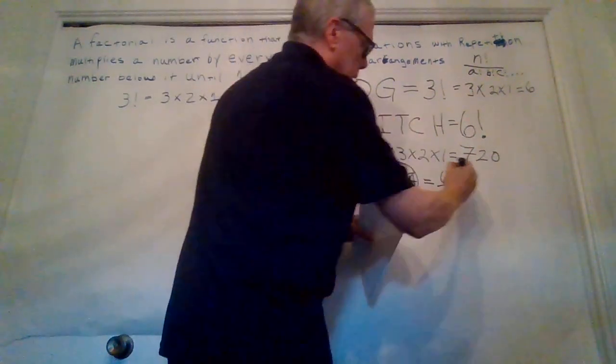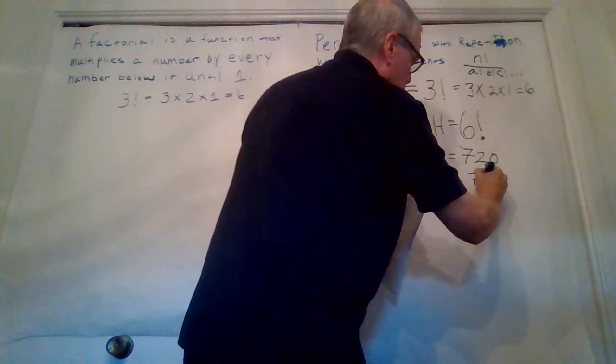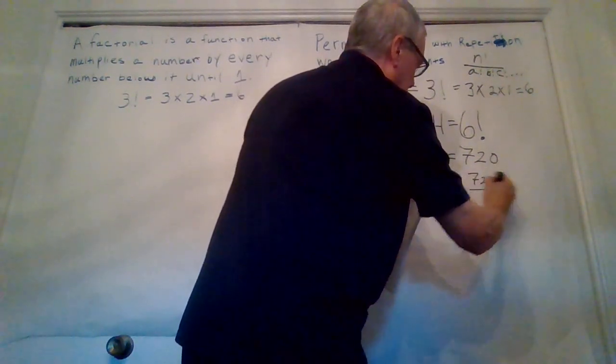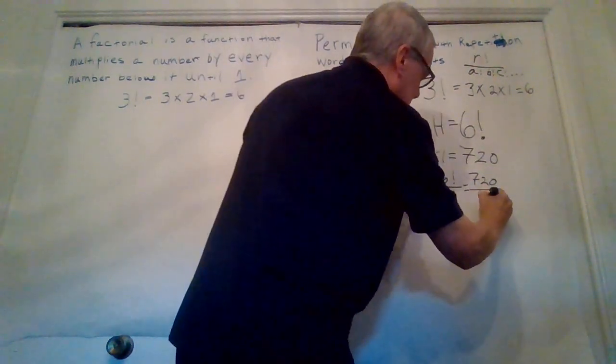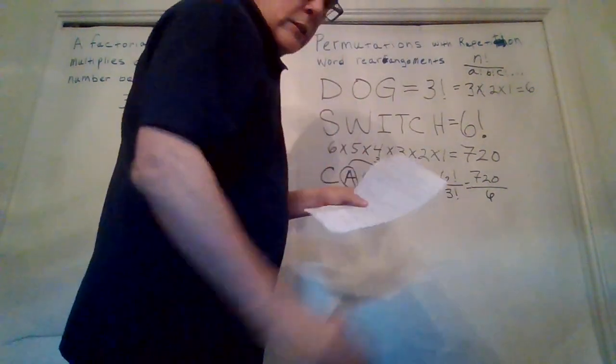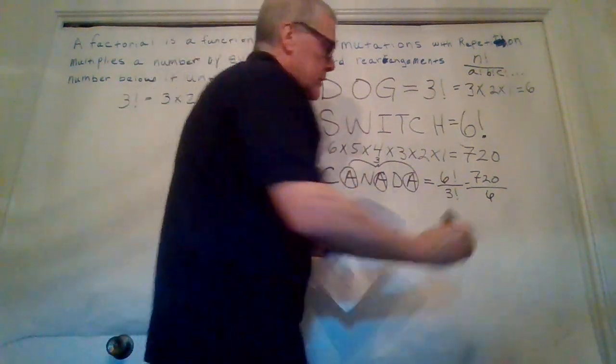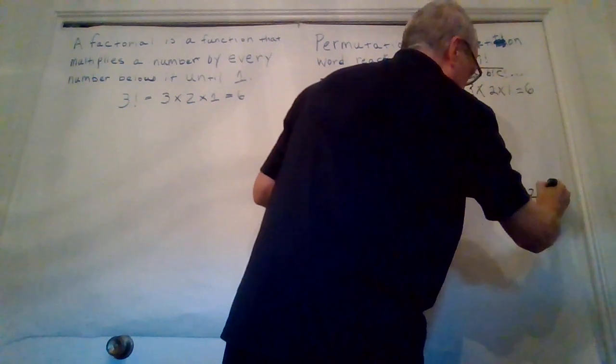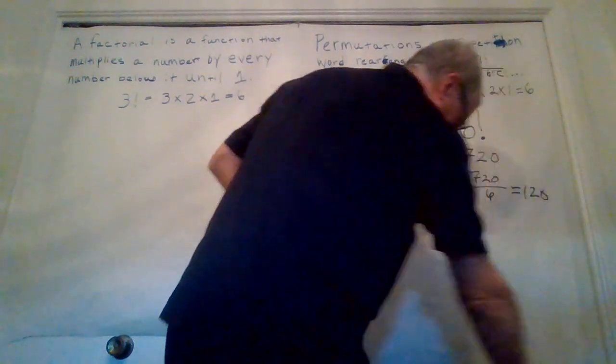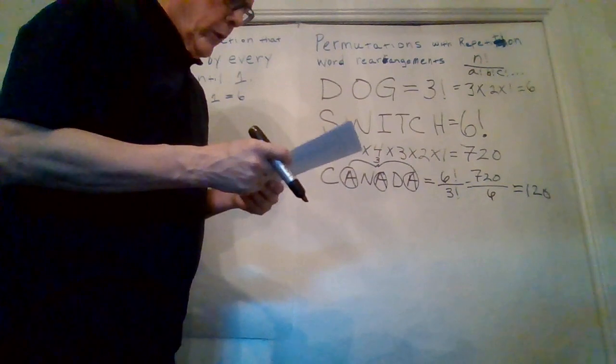So we know from switch that 6 is 720. And we know from dog, 3 is going to be 6. So we divide 720 by 6, and we will get 120.